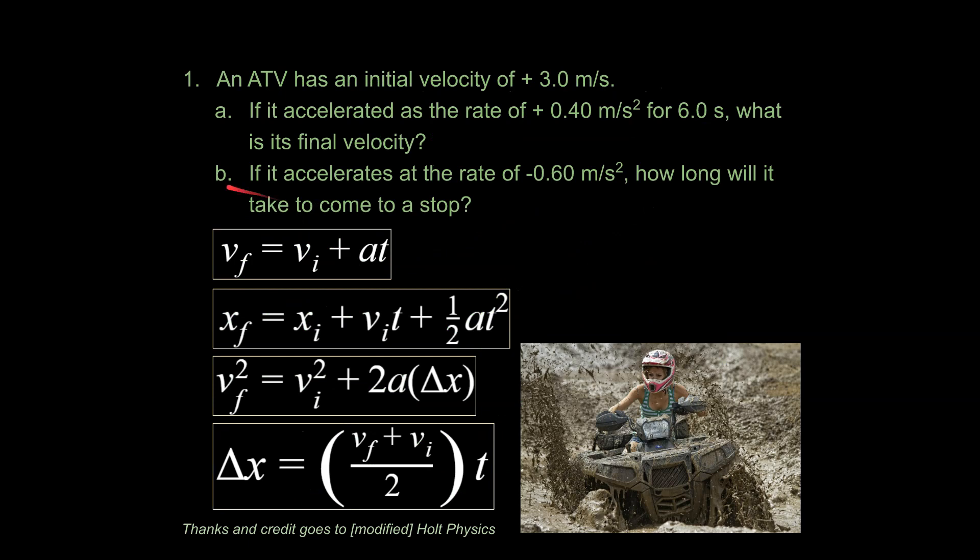The first problem I want to give you is an ATV has an initial velocity of three meters a second. If it accelerated at the rate of 0.40 meters per second squared for six seconds, what is its final velocity? And then there's a B part that we'll get to later.